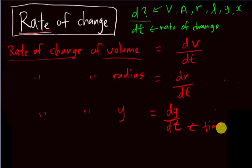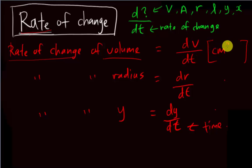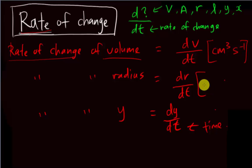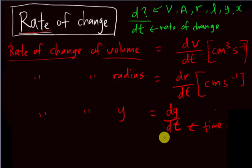You can also find the variable from the units given. Volume is usually given in cm³, and rate of change of volume will be cm³ per second. Radius is a length, so it will be cm per second. Rate of change of y might just be units per second — it depends, but the time unit is always in the denominator.